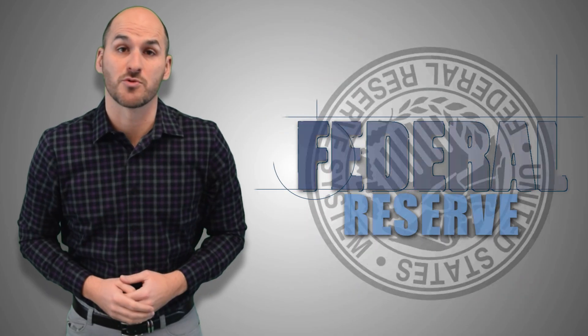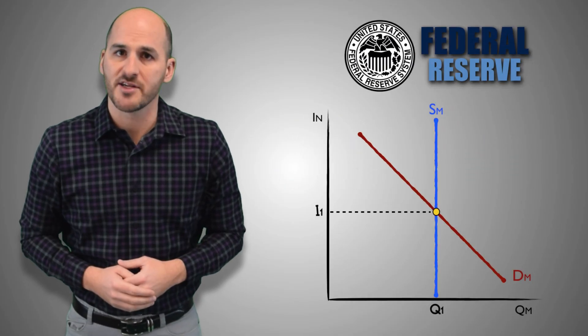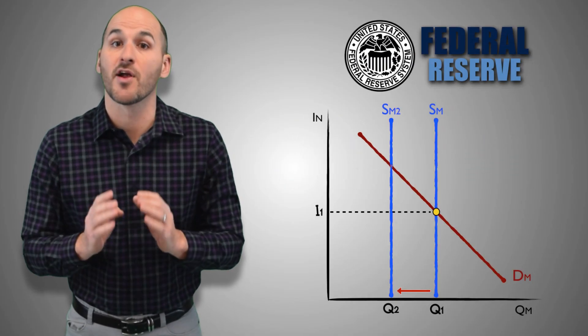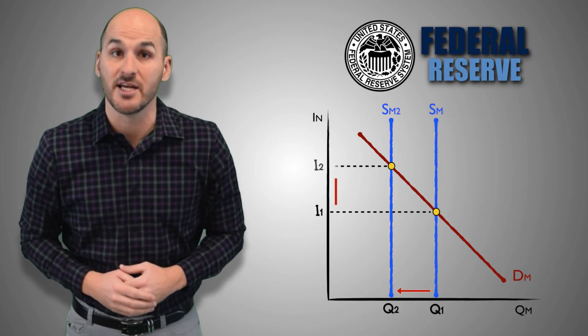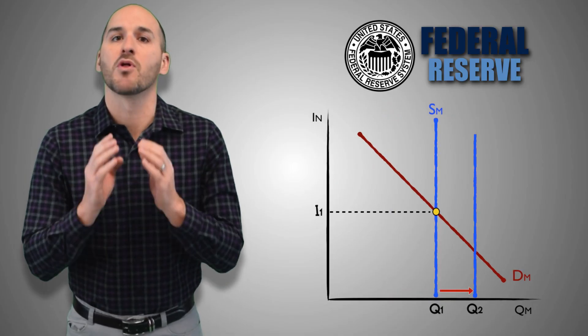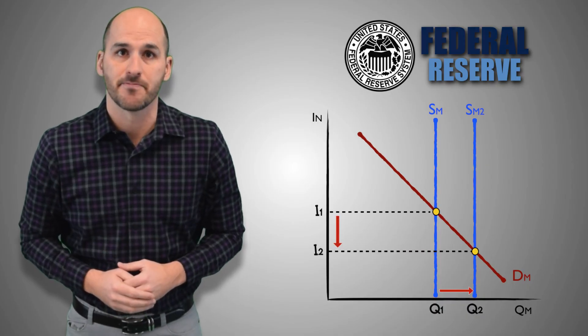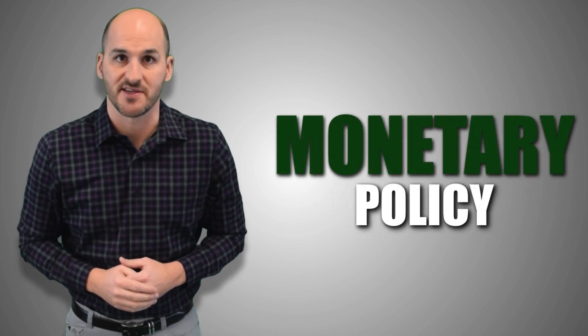However, the Federal Reserve has a role to play too. The Fed can use several monetary policy tools to manipulate the money supply and therefore influence interest rates, which will directly impact investment spending by firms and will affect aggregate demand and real GDP output. In this video, we'll focus on the Federal Reserve and how it manages the money supply and influences interest rates through monetary policy.